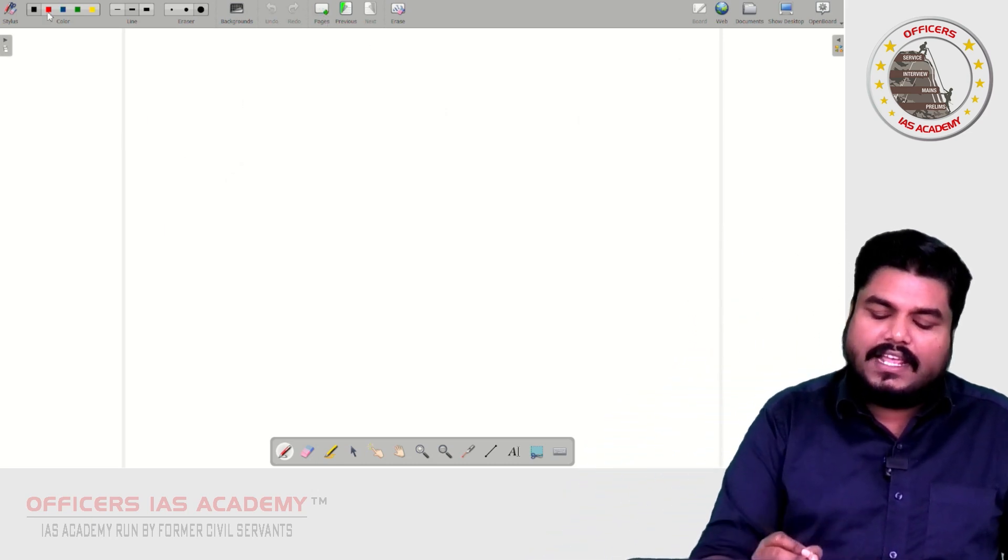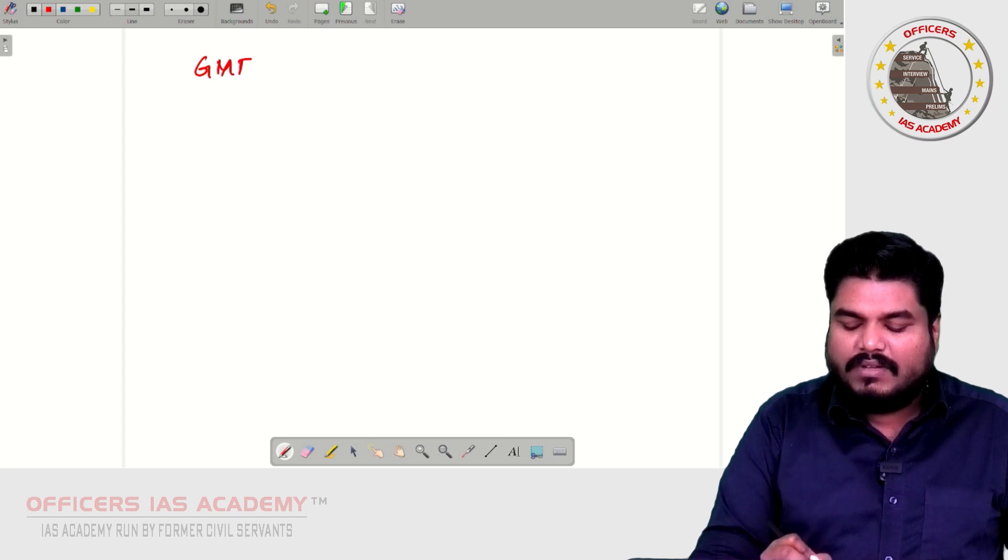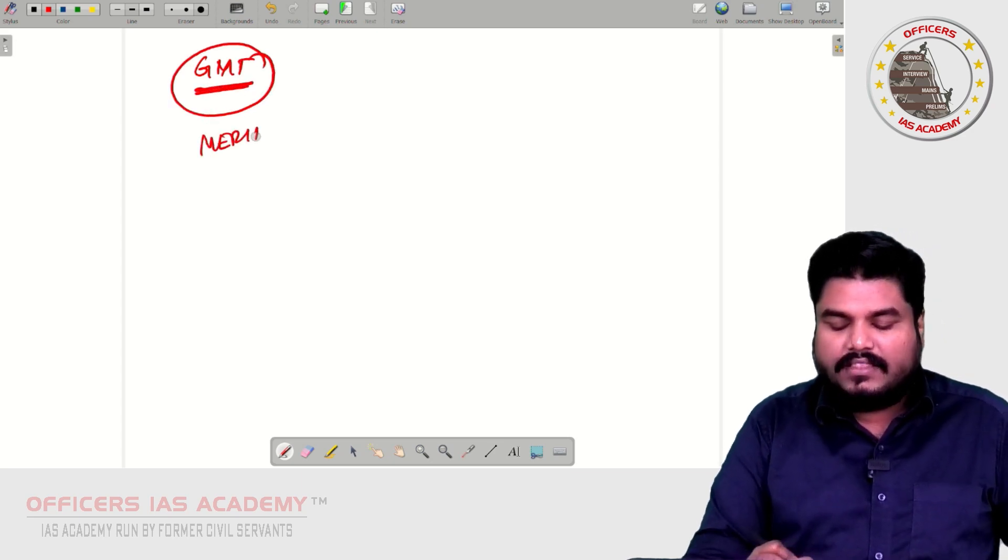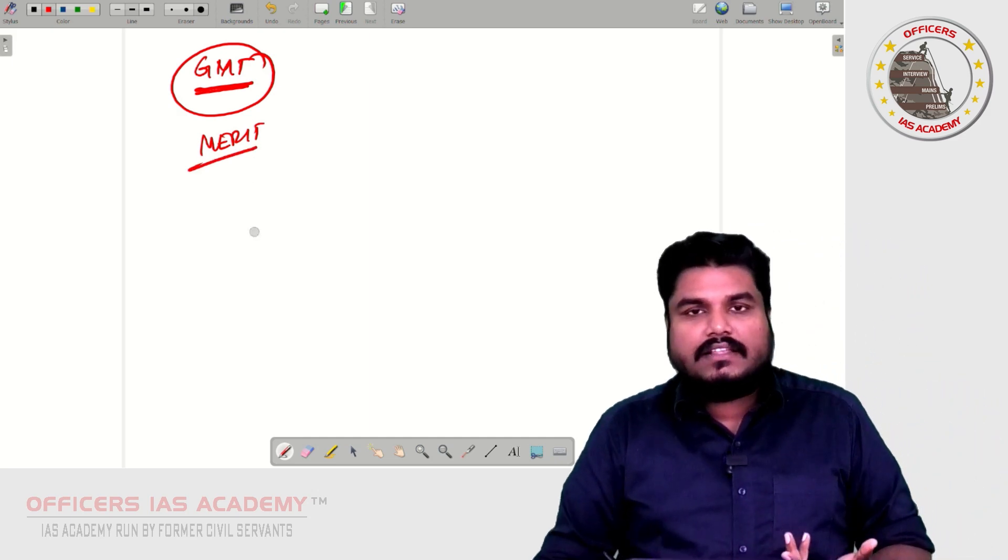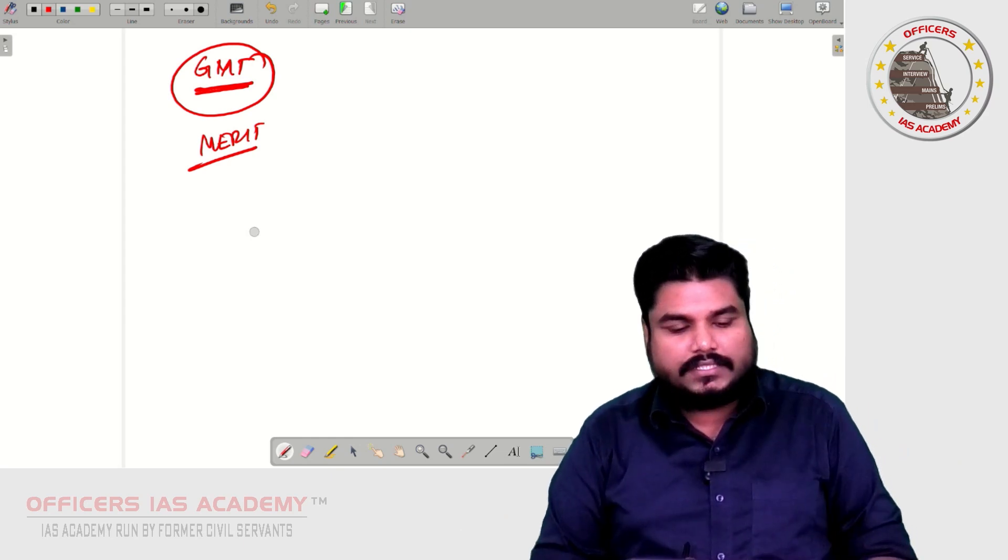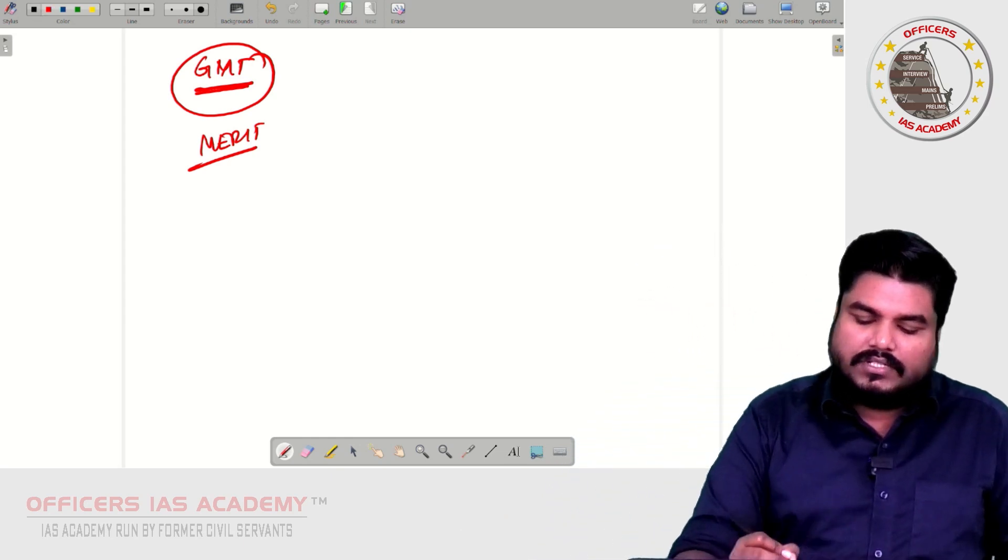So now, as an idea, Global Minimum Tax has lot of merit, no doubt. When this comes into reality, then BEPS, the scope for BEPS is gone. But is it really possible to achieve?